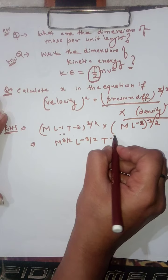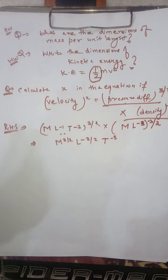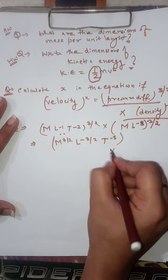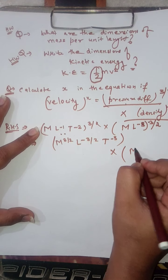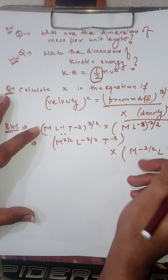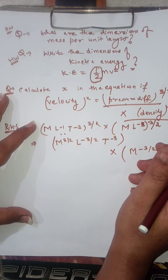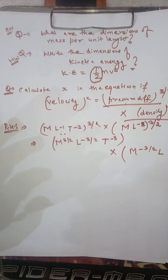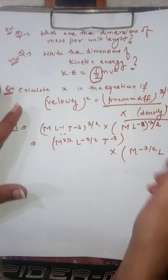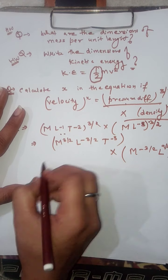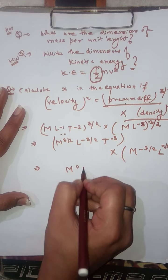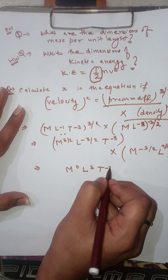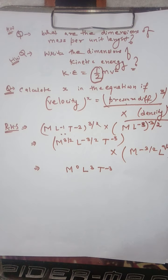Expanding the right hand side: for the M terms we get M to the power (3/2) times M to the power (−3/2) = M⁰. For L: L to the power (−3/2) times L to the power (9/2) = L³. For T: T⁻³. So the right hand side equals M⁰ L³ T⁻³.